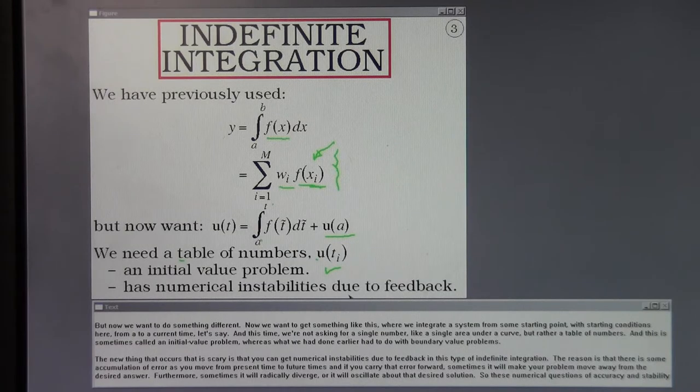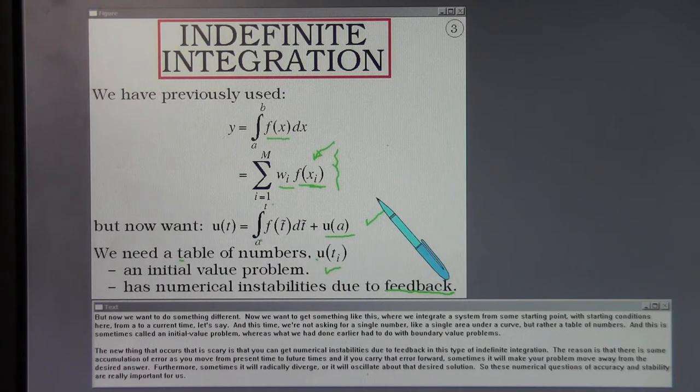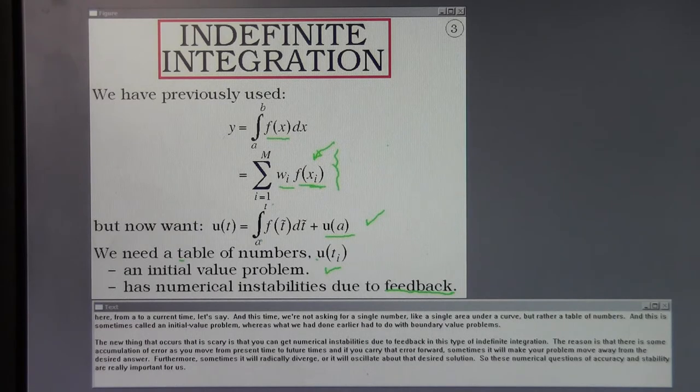The new thing that occurs that is scary is that you can get numerical instabilities due to feedback in this type of indefinite integration. The reason is that there is some accumulation of error as you move from the present time to future times. And if you carry that error forward, sometimes it will make your problem move away from the desired answer. Furthermore, sometimes it will erratically diverge or it will oscillate about that desired solution. So these numerical questions of accuracy and stability are really important for us.